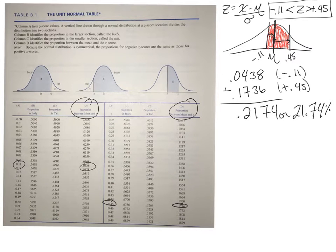So what you're saying is, what's the probability of me just randomly selecting a score and that score having a z-score between positive 0.45 and negative 0.11? You're looking, again, for this middle section here, and that's where we use the D column.